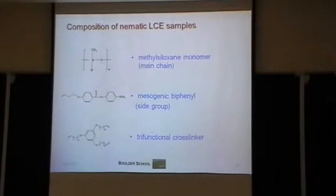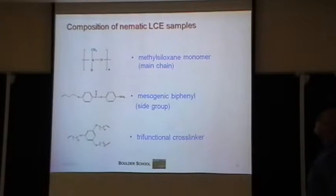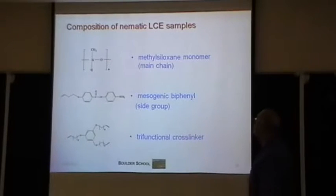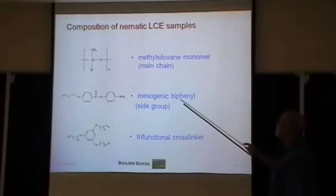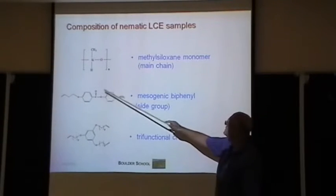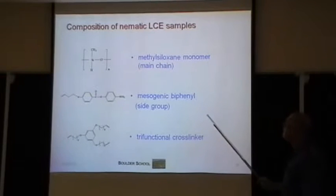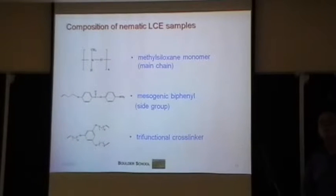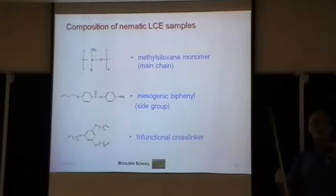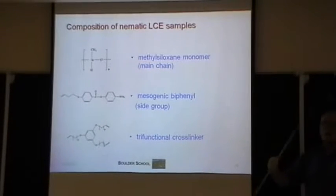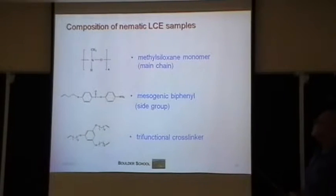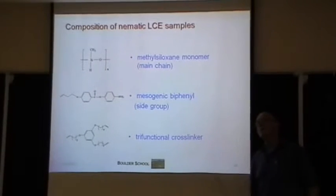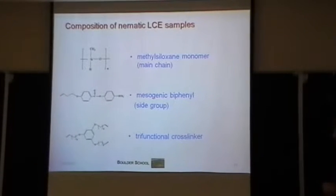For those interested in chemistry: typically siloxane is used in the main chain, and one can have typical liquid crystal-like molecules either as part of the main chain or as pendant groups. There are lots of different ways — side chains end-on, side-on, and so on. Then you have some kind of cross-linker to make this into a network.